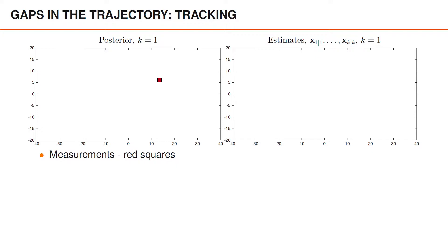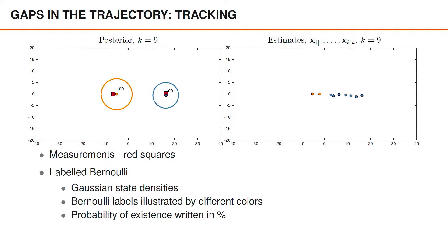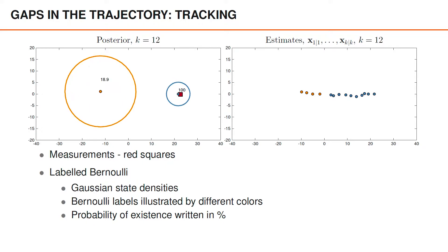At time step 3, we get a detection close to the birth centered at the origin, giving us a labeled Bernoulli. The Gaussian mean and covariance are illustrated, the label is shown using a unique color, and the probability of existence is written in percent. At time step 8, the second object appears and we get a new labeled Bernoulli — the label is illustrated as orange. On the right you can see a sequence of blue labeled estimates and a single orange estimate for the current time step. Moving to time step 11, we have a first misdetection. The probability of existence is lower for the orange object, but still large enough so that we extract an estimate for the orange Bernoulli.